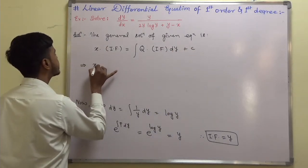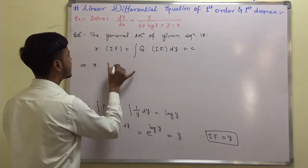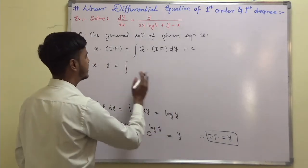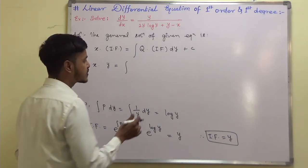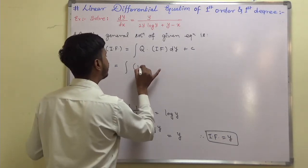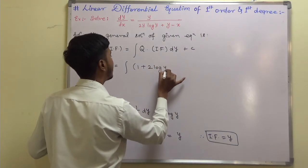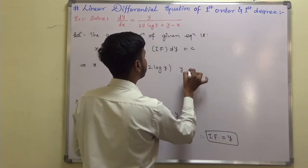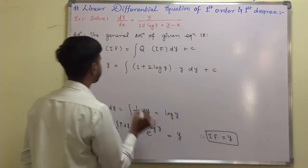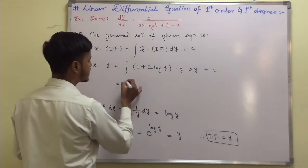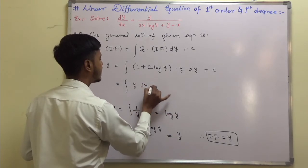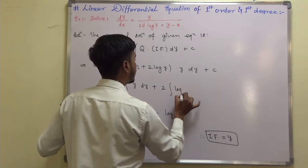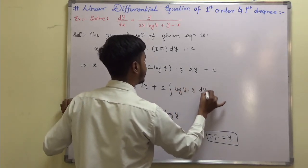This implies x into the integrating factor y is equal to integration of q into integrating factor dy plus c. The integrating factor is y and q is 1 plus 2 log y, so this becomes integration of y plus 2 times integration of log y into y dy plus c.